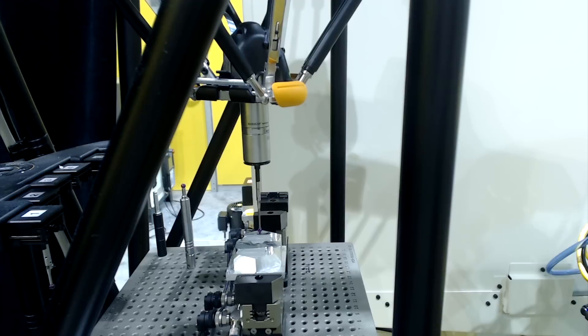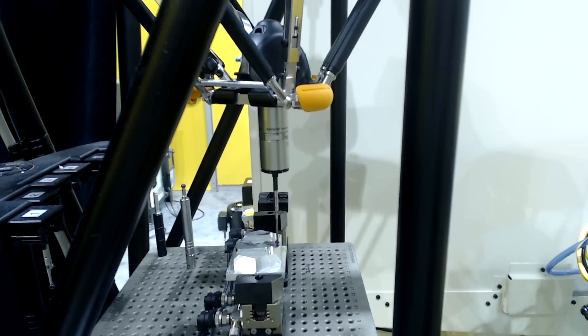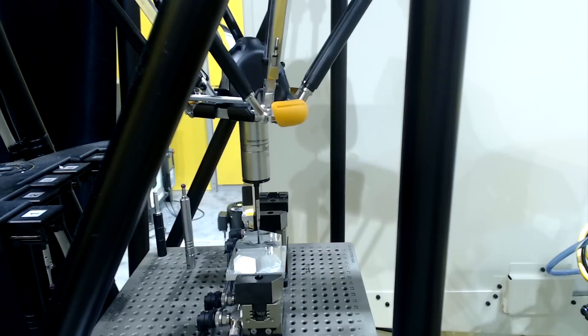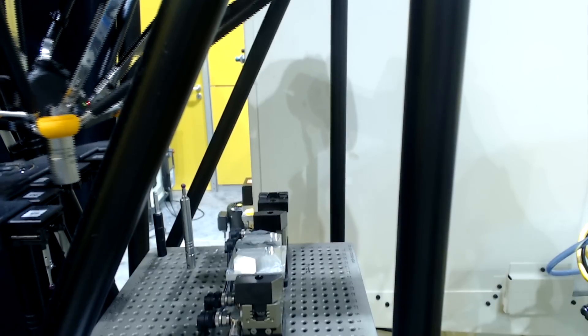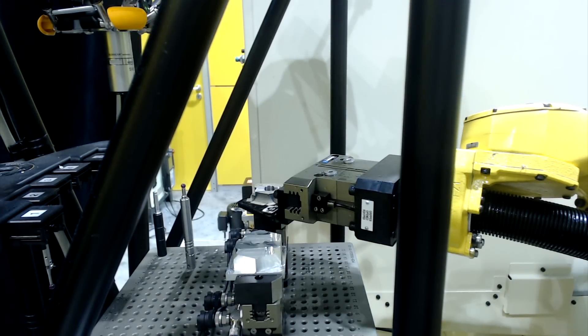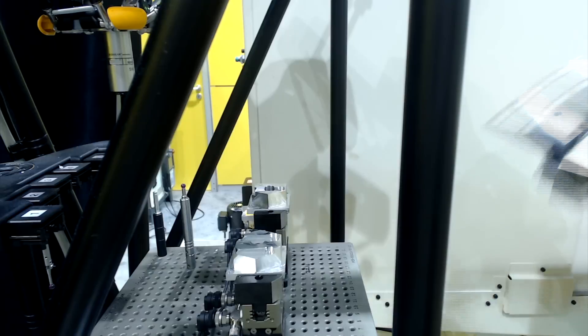The Renishaw Equator gauges the part to within 5 micron tolerance and provides feedback and live offset to the first robo-drill machine. When gauging is finished, the robot picks the part and loads it into the second DIB high-speed robo-drill for its machining.